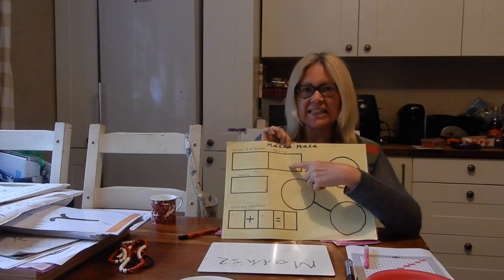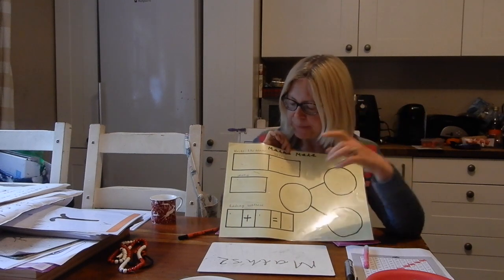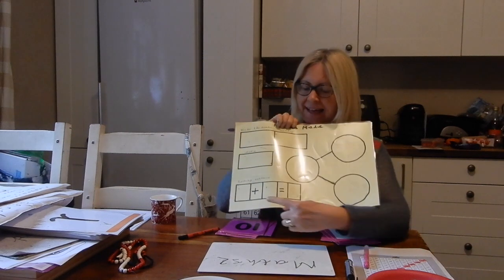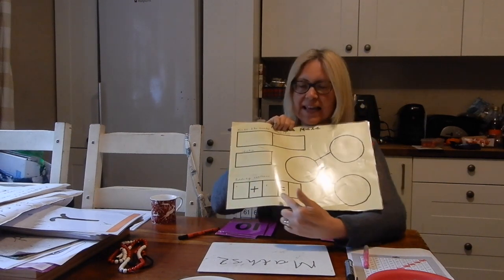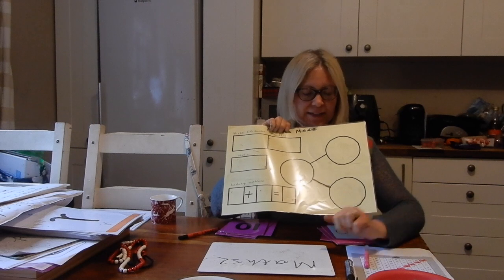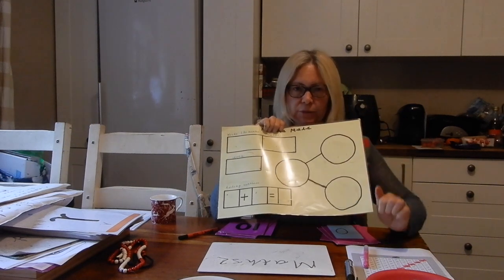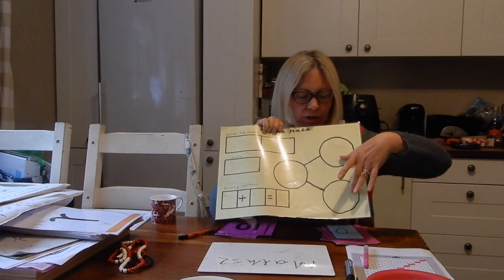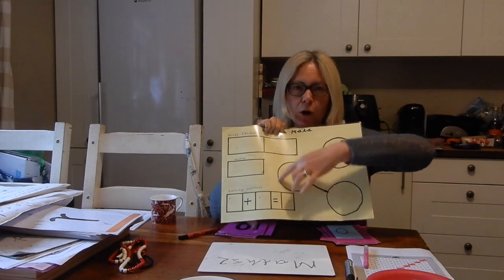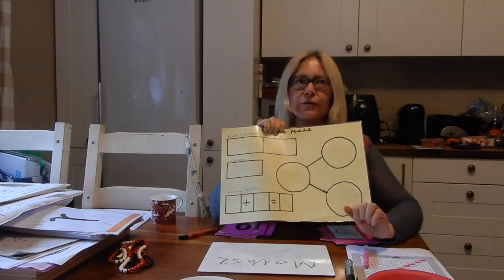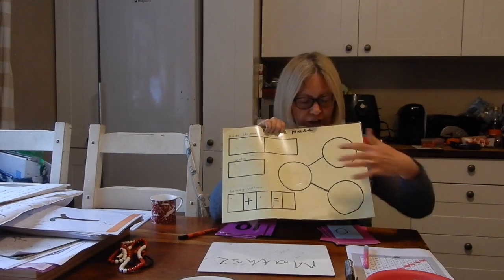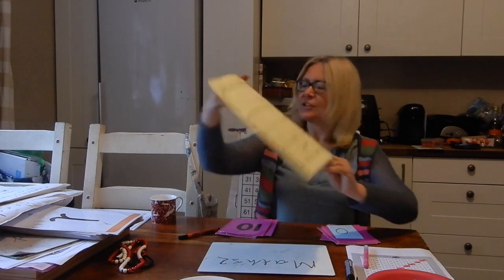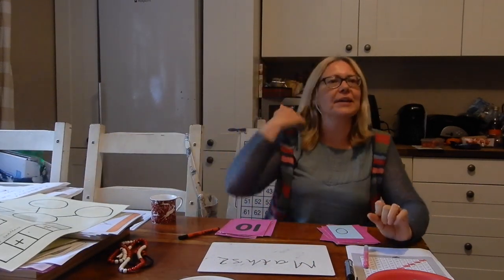Write the number, put it in tally lines, getting quite big now. Dots for 14 or 24. Do an adding sentence here, two numbers that add together to make 14 or 24. And your part, part, whole model here where you've got two numbers, one part, second part where they add together to make the whole number of 14 or 24. Try and make this one different to your adding sentence if you can. So 14 or 24 is your number of day.